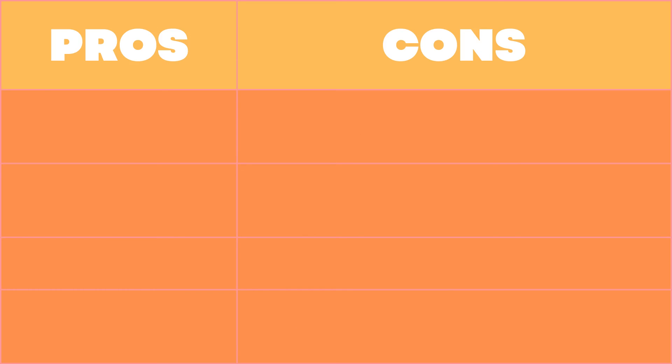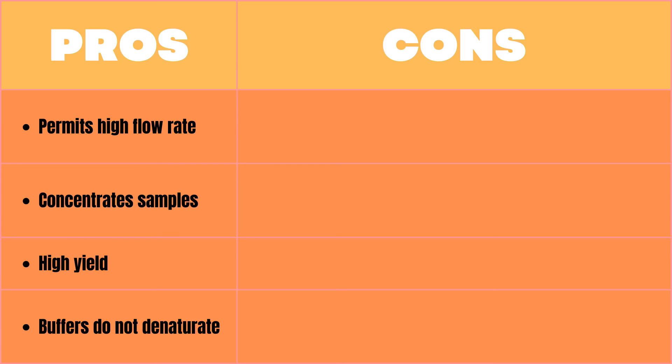Okay next let us also look at the pros and cons of ion exchange chromatography. IEX pros include that it permits a high flow rate, it concentrates the samples, it has a high yield, and its buffers are non-denaturing.